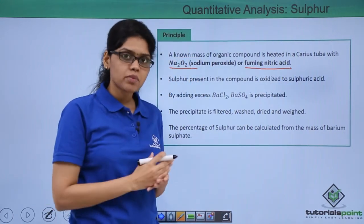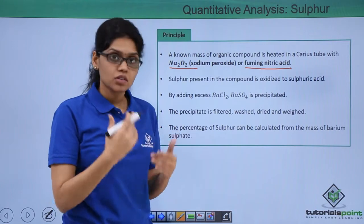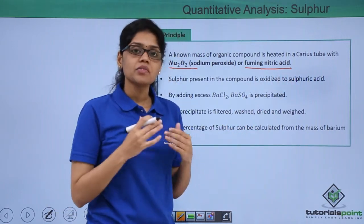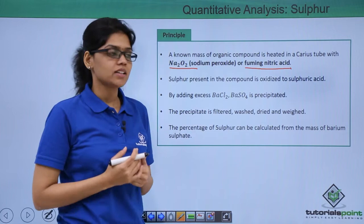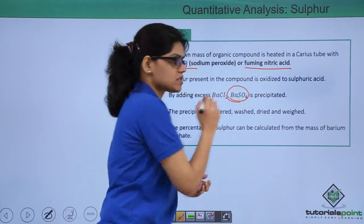So what happens is that sulphur present in an organic compound gets converted to sulphuric acid and if we have excess of barium chloride then barium sulphate is precipitated out.